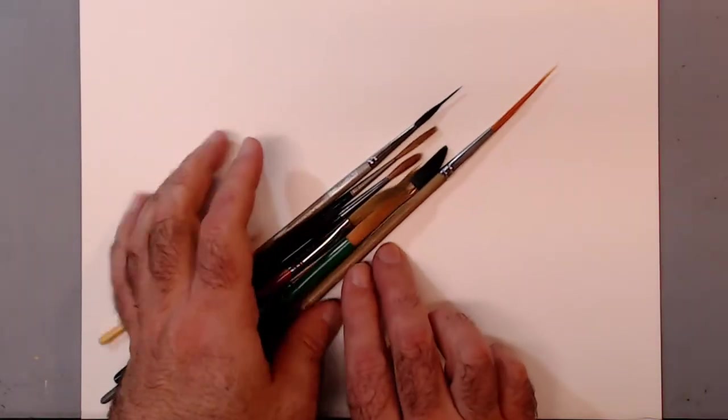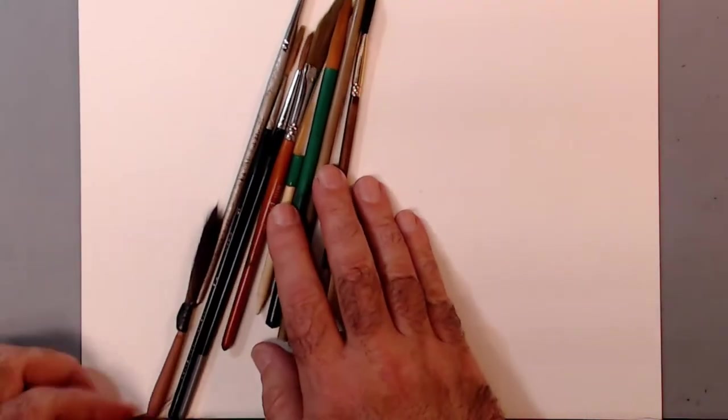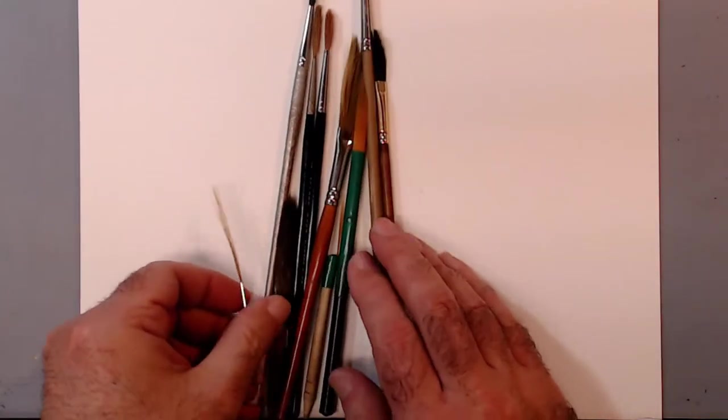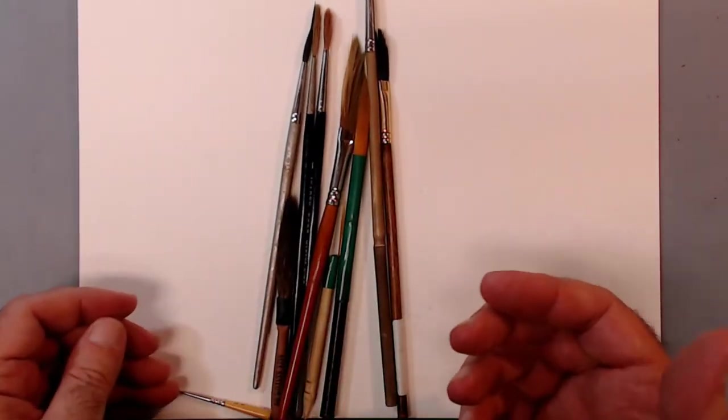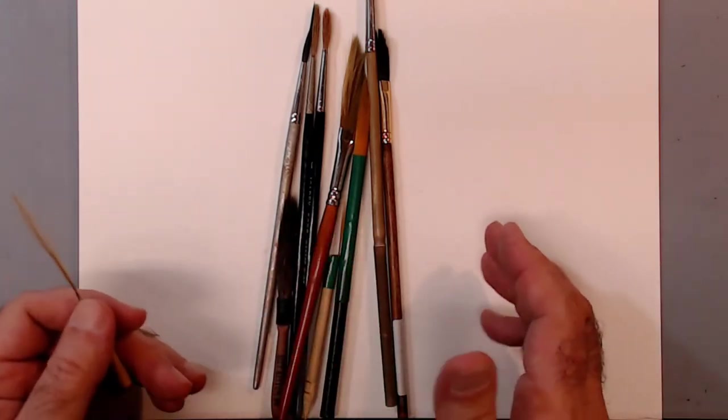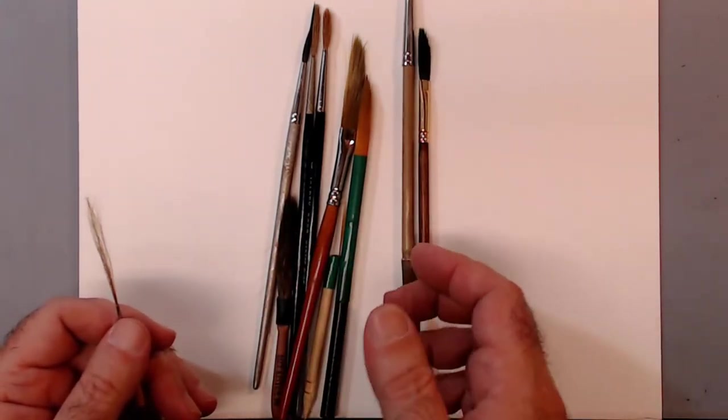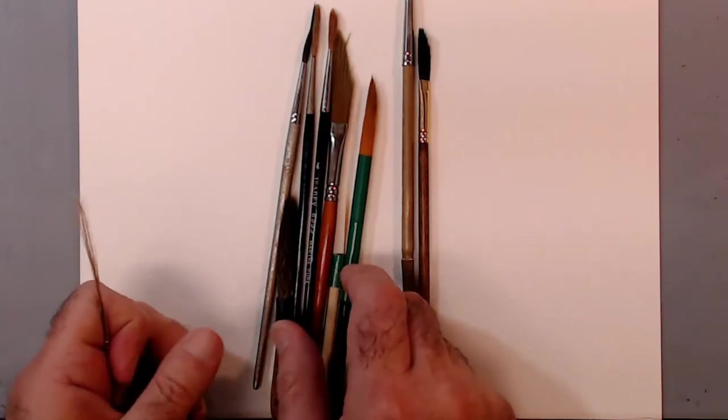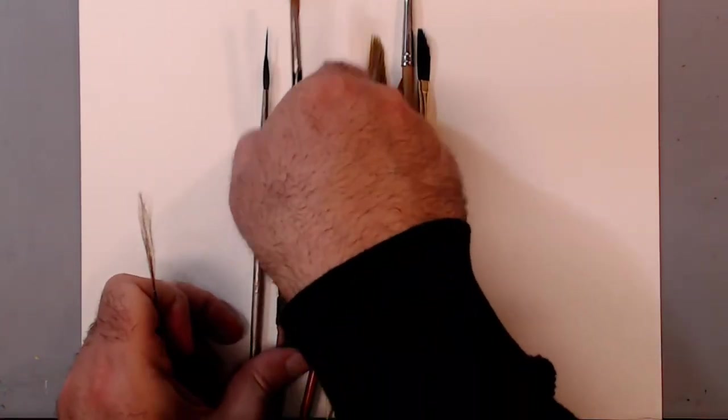Today I want to talk to you about a family of brushes called riggers, liners, and dagger brushes. They look more or less something like this in general. We're going to look at each individual one or each individual branch of this family and see what they do and why they were created.